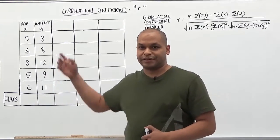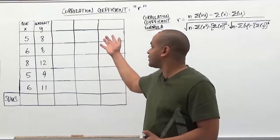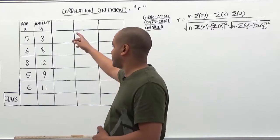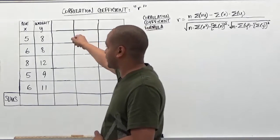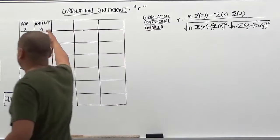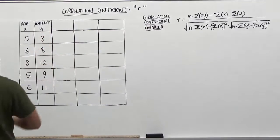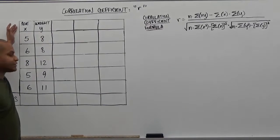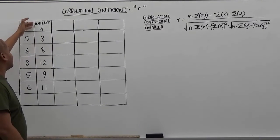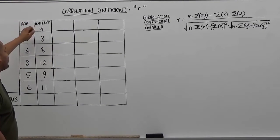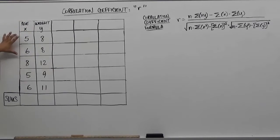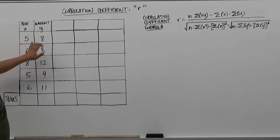The age of the child will be considered in years, while the weight will be in kilograms. Here we're going to take a look at our samples. We have a table where the age is determined by the variable x and the weight is determined by the variable y. Here we see that we have a set of collected samples and pairs.